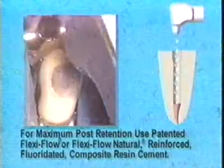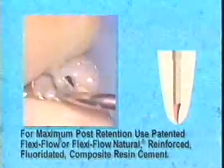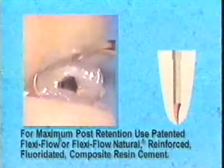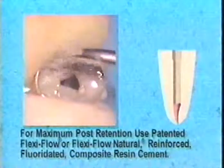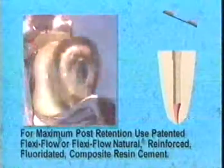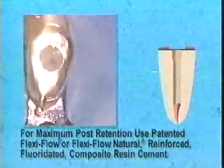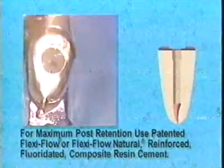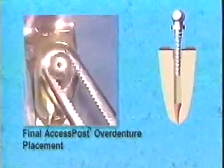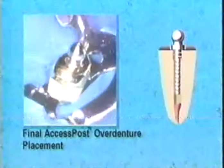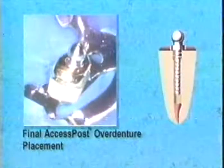Patented FlexiFlow or FlexiFlow Natural fluoride-releasing composite resin cement is placed in the canal with the Lentulo spiral. Additional cement is placed onto the coping and the coping is seated into place. Before the cement has set, coat the shank of the post and fully seat the Access Post Overdenture. Post insertion is completed when the flange is fully seated within the coping. The excess cement is removed and you are now ready to insert the nylon cap or Easy Change attachment as previously described.